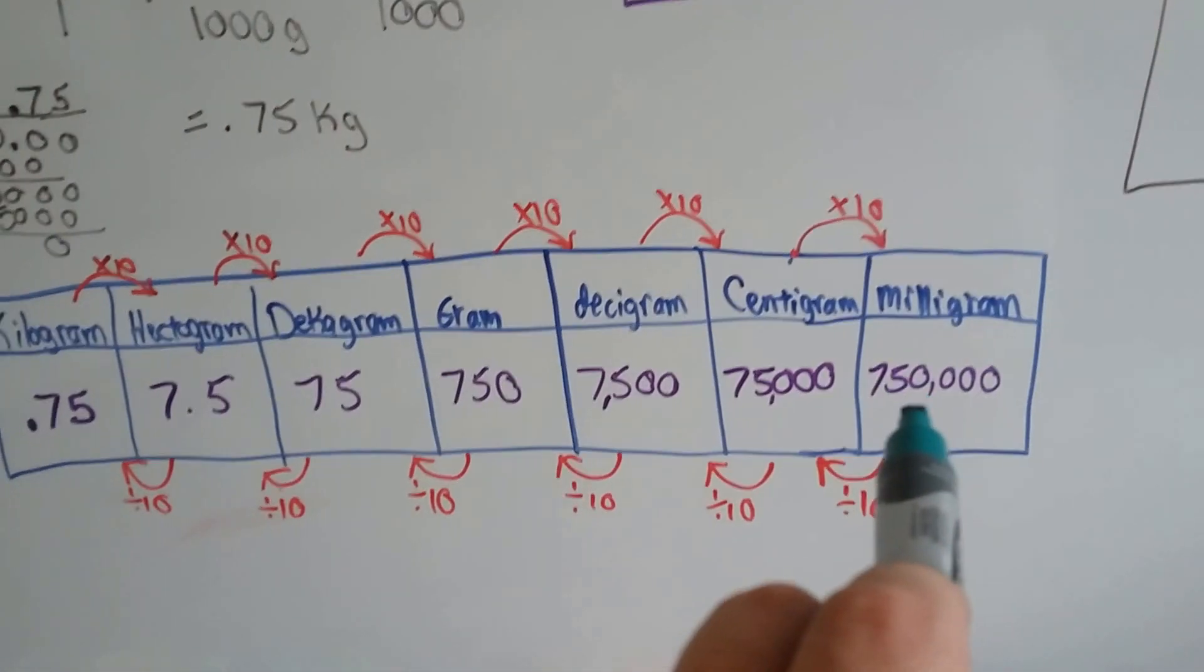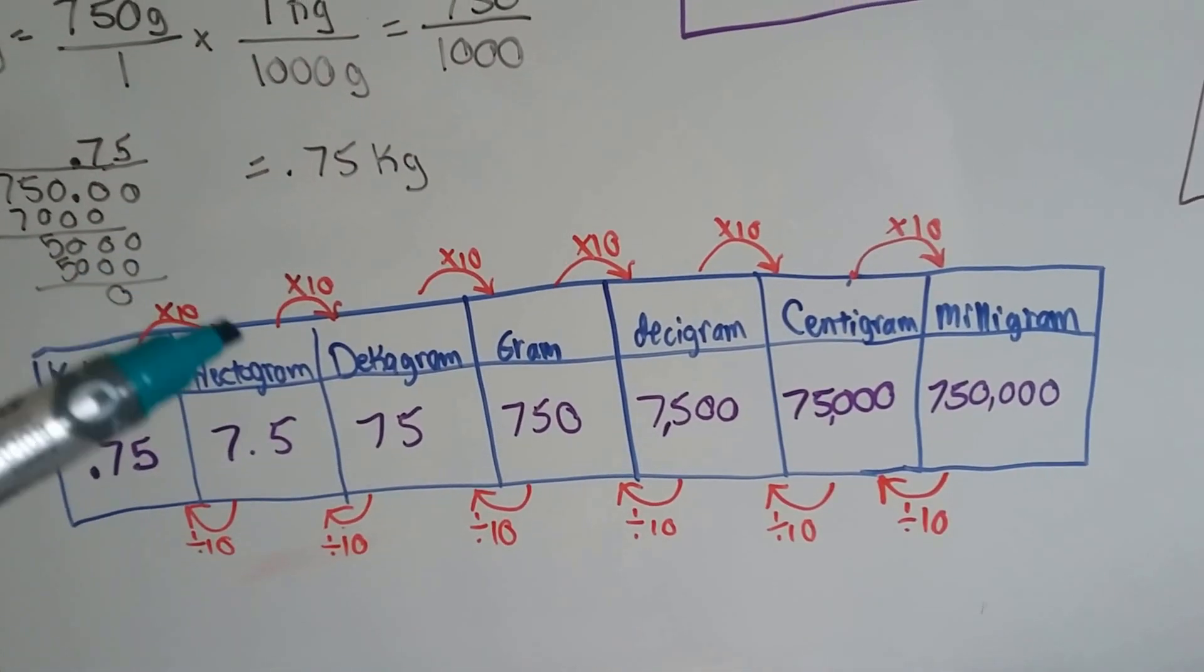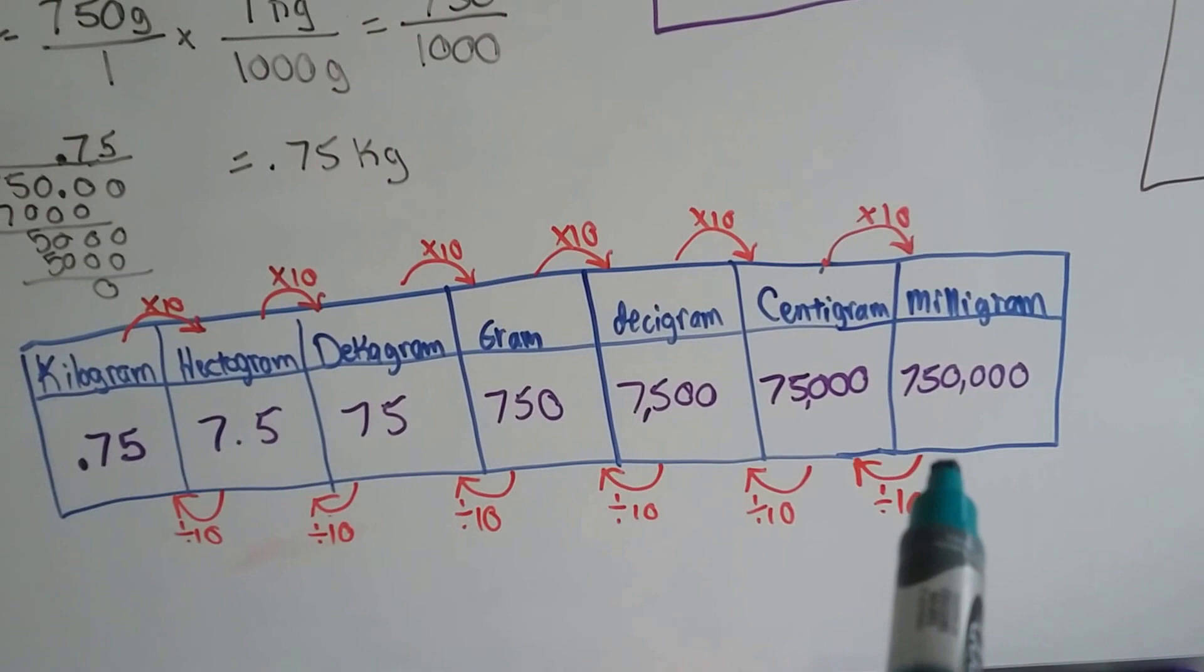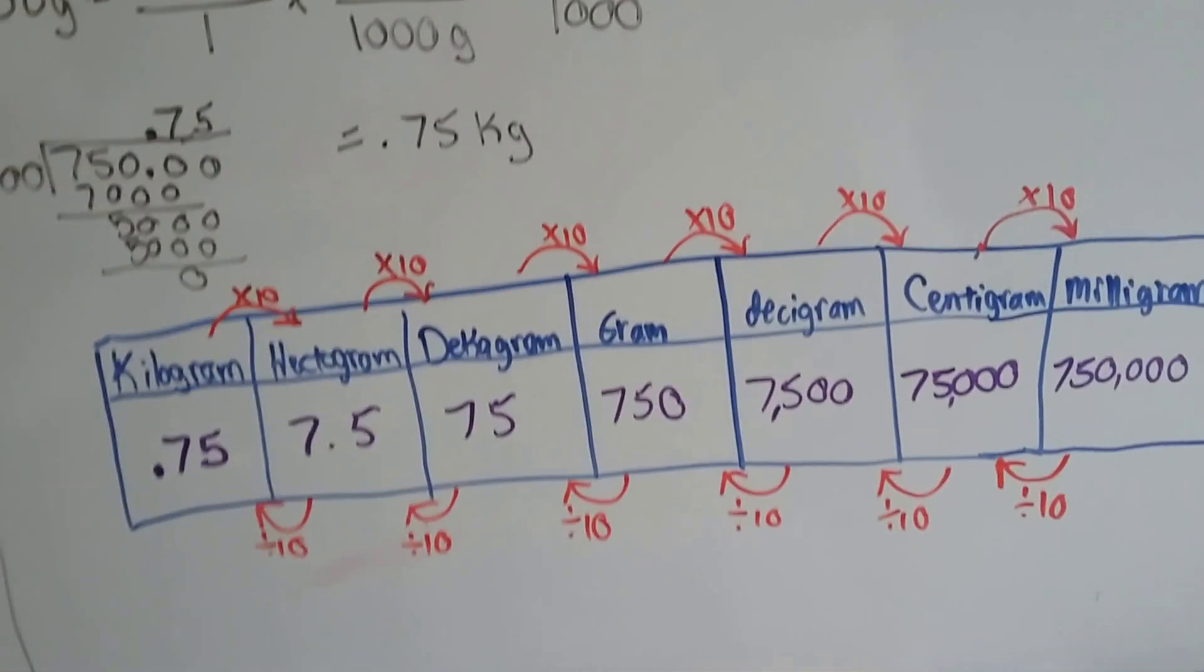So look at what it would be in milligrams. It would be 750,000 because as we move to the right, we multiply by 10. And as we move to the left in the metric system, we divide by 10.